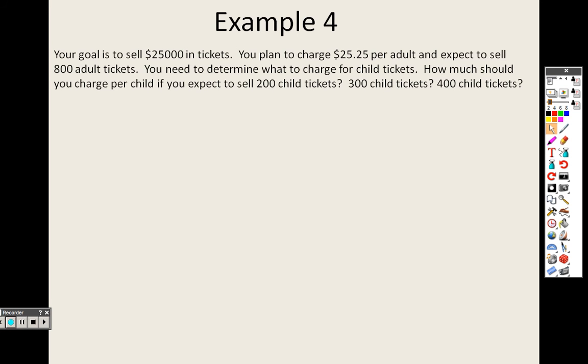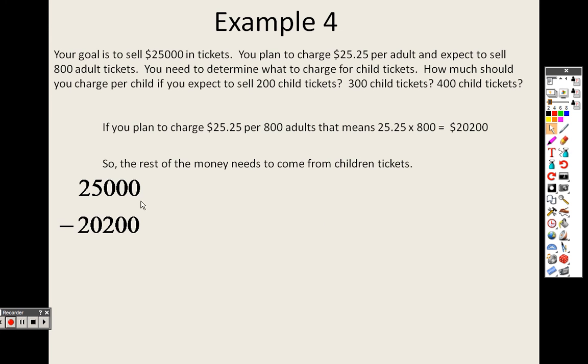Example 4. Your goal is to sell $25,000 in tickets. You plan to charge $25.25 per adult and expect to sell 800 adult tickets. You need to determine what to charge for children's tickets, and how much should you charge per child if you expect to sell 200 child tickets, 300 child tickets, 400 child tickets. So anyway, you expect 800 people, right? And you want to charge $25.25 for adult. Per means multiply, so that's why I multiply those together. So we instantly know that right there, we made $20,200, but I need to make $25,000. So I subtract the 2 to find out that I need to make $4,800.